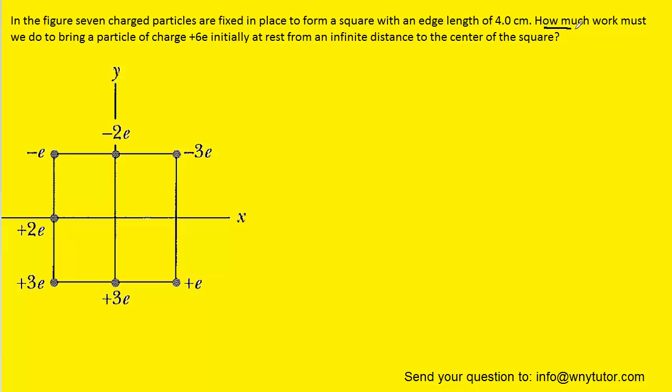If we read the question again, it asks, how much work must we do? The key phrase there is we do, because when they ask how much work we do, what they're asking for is the applied work. So this is how much work we would have to input into the system in order to move a charge from an infinite distance over to the center of the square. So we're looking for this applied work.